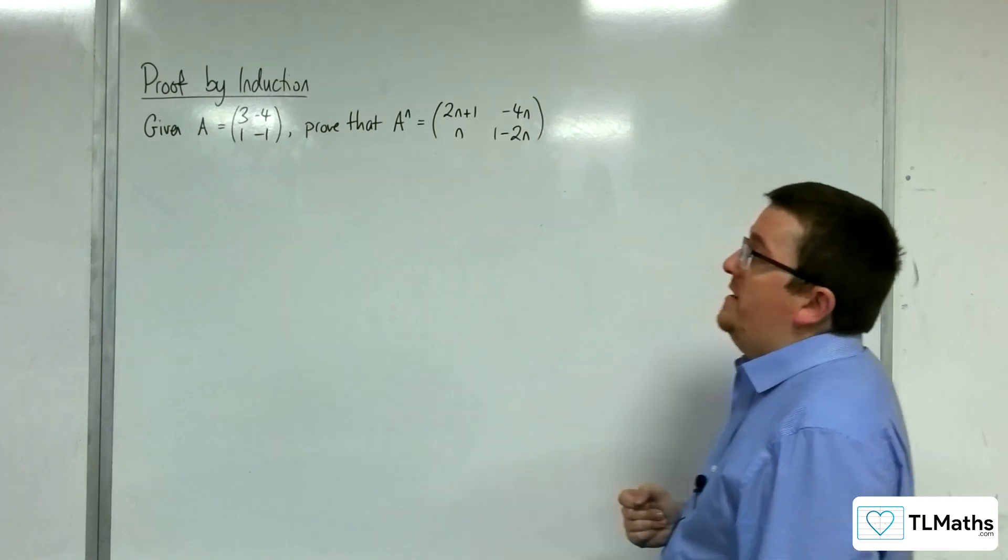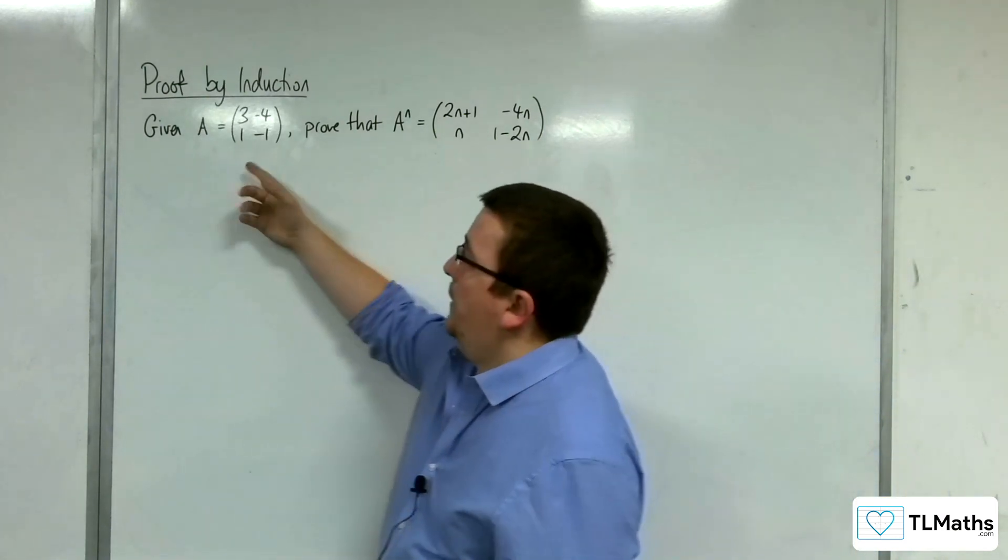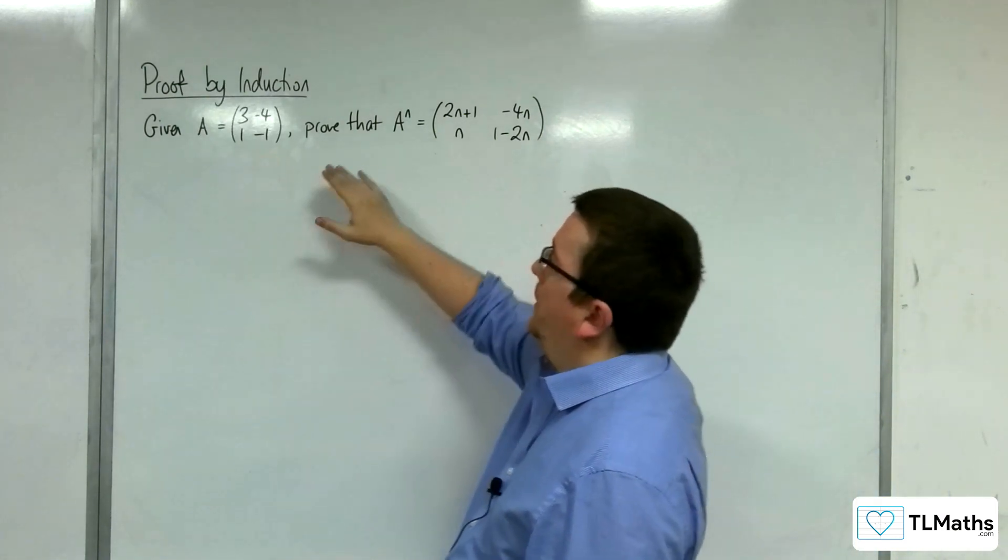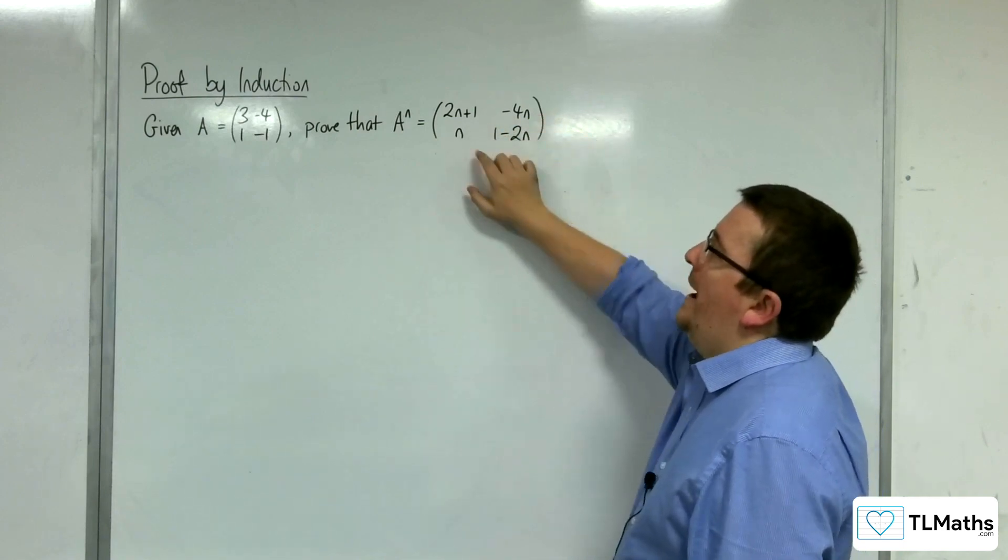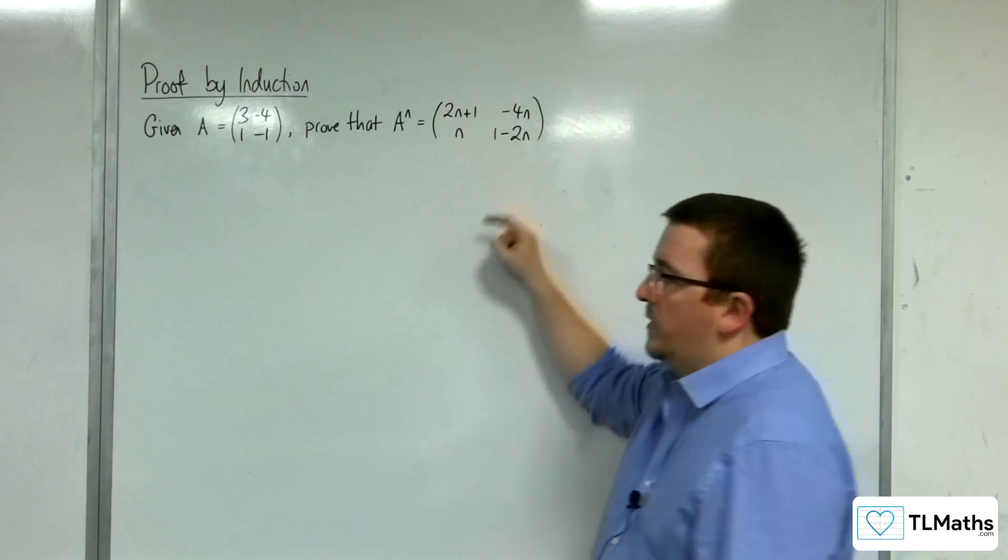In this video we're going to prove by induction that given that A is the matrix (3, -4; 1, -1), we can prove that A to the n is (2n+1, -4n; n, 1-2n).